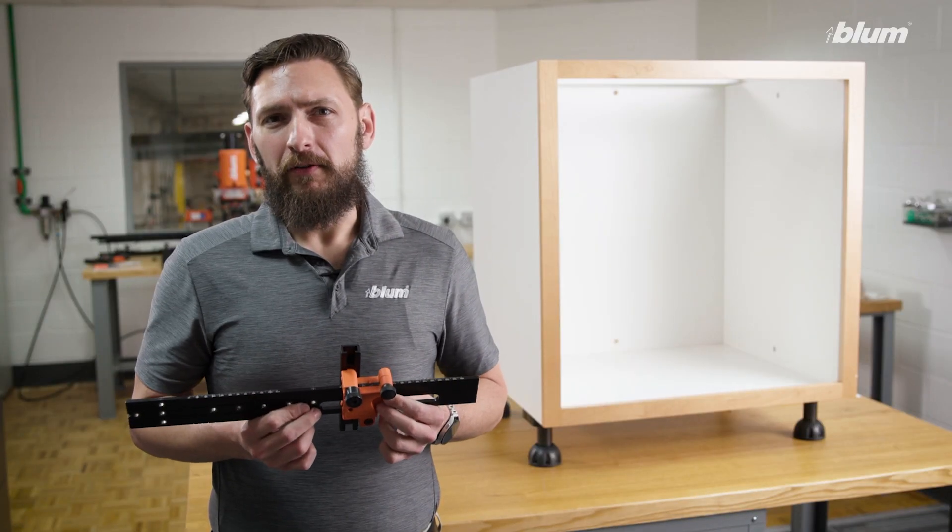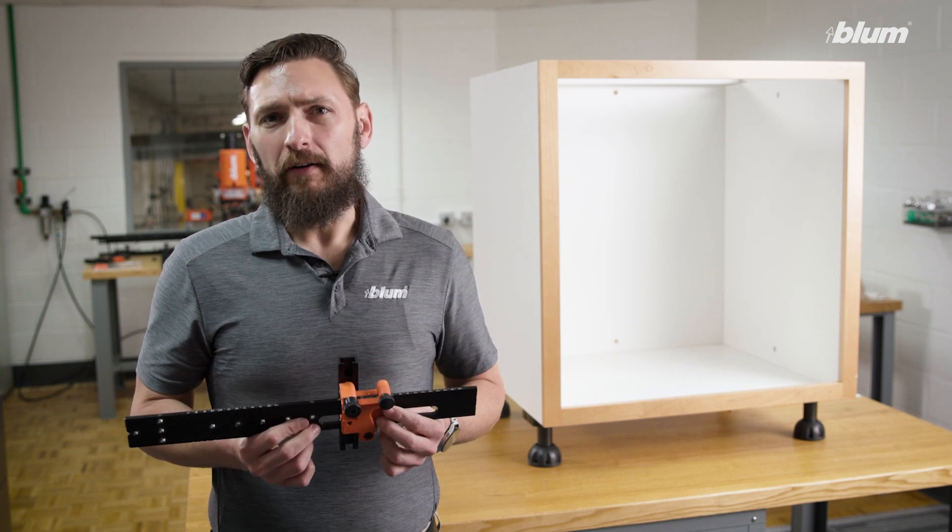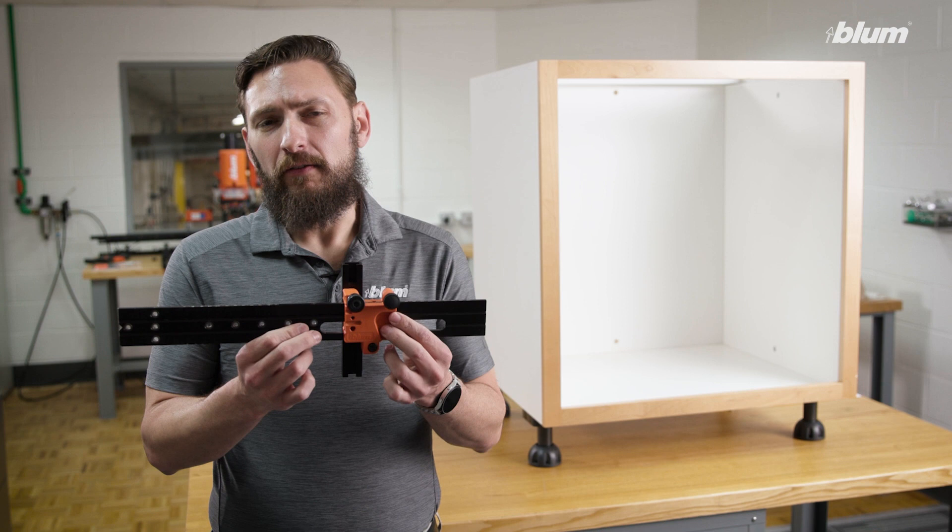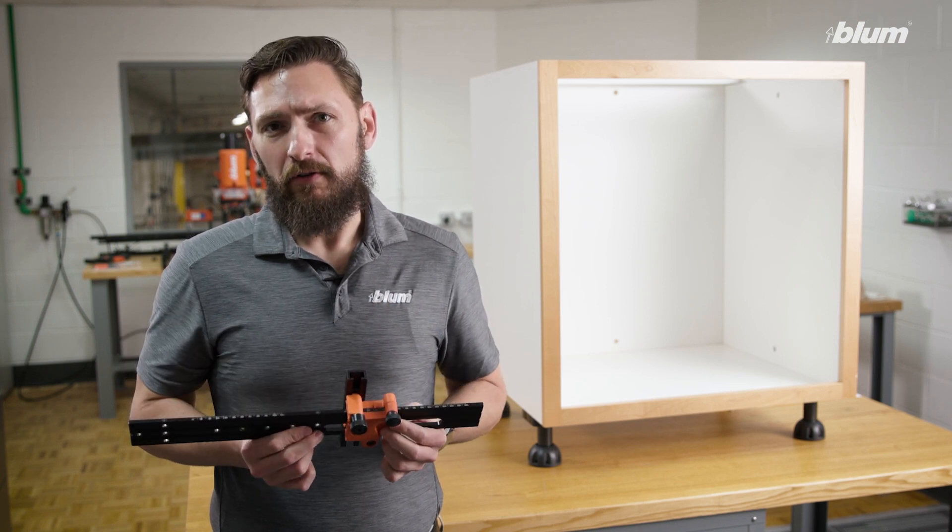Once you know where each runner will be located, the next step is to pre-drill holes in the cabinet for them. For our installation, we will be using the Universal Individual Template. However, you could also measure and drill those holes manually.